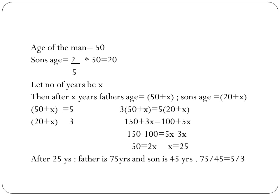We verify: after 25 years, father's age = 50 + 25 = 75, son's age = 20 + 25 = 45. And 75/45 = 5/3 — correct. So the answer is 25 years.